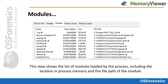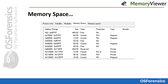Next is the modules tab, which in this slide is showing DLLs that are loaded by the explorer.exe process. This view shows the list of modules loaded by the process, including the location in process memory and the file path of the module. This view also shows the process memory allocation within its virtual address space. Double-clicking on a memory section opens the internal viewer, and right-clicking on a memory section allows the user to dump the memory contents into a file. The memory sections can also be filtered based on different criteria.